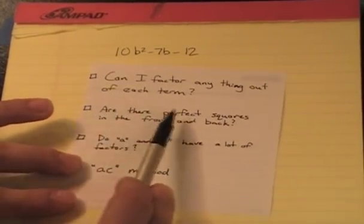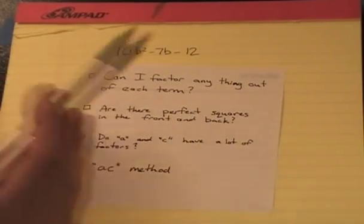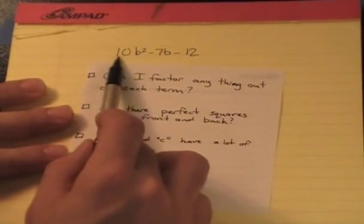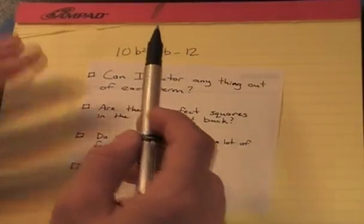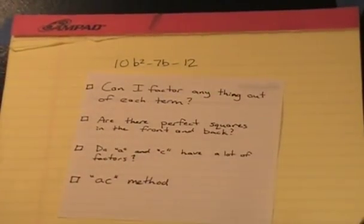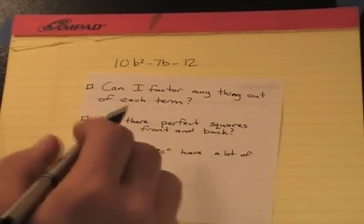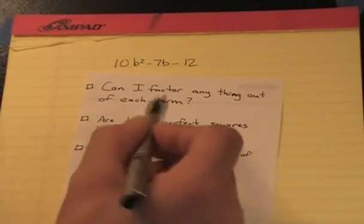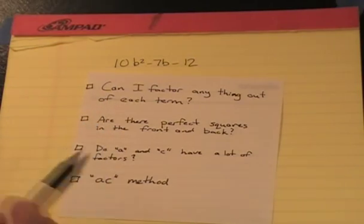Second question: Are there any perfect squares in the front and back? So I'm going to look in the front. 10b squared, is that a perfect square? I don't think so. How about 12? Not a perfect square as well. So we can move on to the next step. We can't use any of our tricks yet.